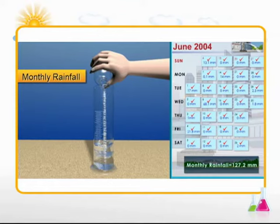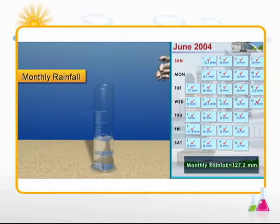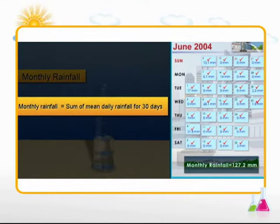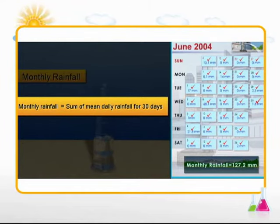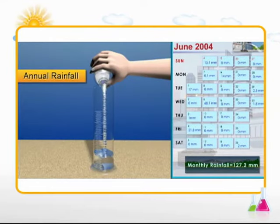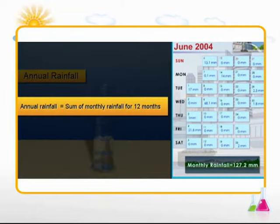Monthly rainfall refers to the total amount of rainfall collected throughout the month — daily rainfall readings for a period of 30 days are added to find monthly rainfall. Similarly, annual rainfall refers to the total amount of rainwater collected throughout the year.